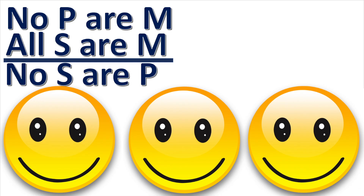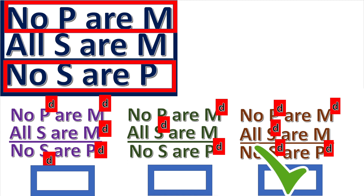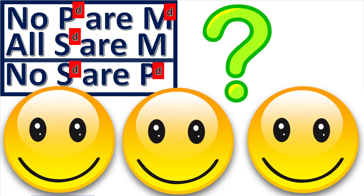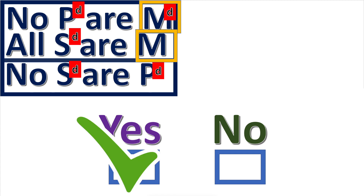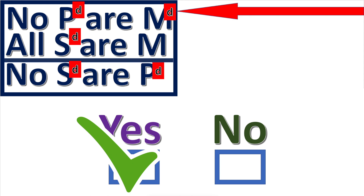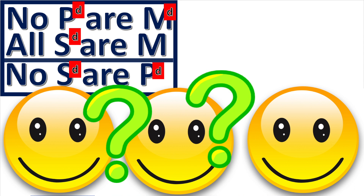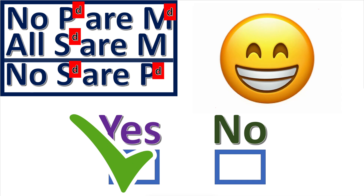Next practice problem: choose the correctly marked syllogism. E propositions distribute both subject and predicate, and A propositions distribute the subject. Is the middle term distributed in either premise? Yes — the middle term is distributed; it has a letter D next to it. Rule one is not broken, so it is possible that this syllogism is valid.